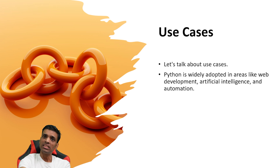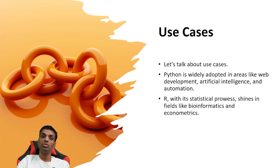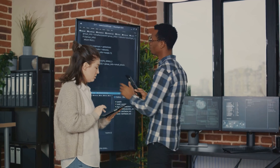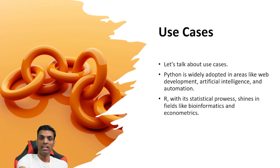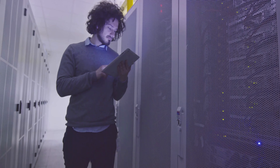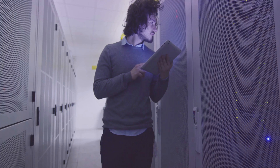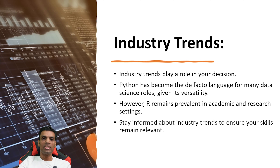In terms of use cases, Python is widely adopted in web development, artificial intelligence, and automation. Django can be used for back-end web development, and RESTful APIs can be developed with Python. For R, it's best for statistical purposes and fields like bioinformatics and econometrics. In industry, people use Python most of the time — it's become a de facto language for many data science roles given its versatility. However, some organizations have been using different languages for a long time and it's not easy to migrate from one programming language to another when you have an existing solution.